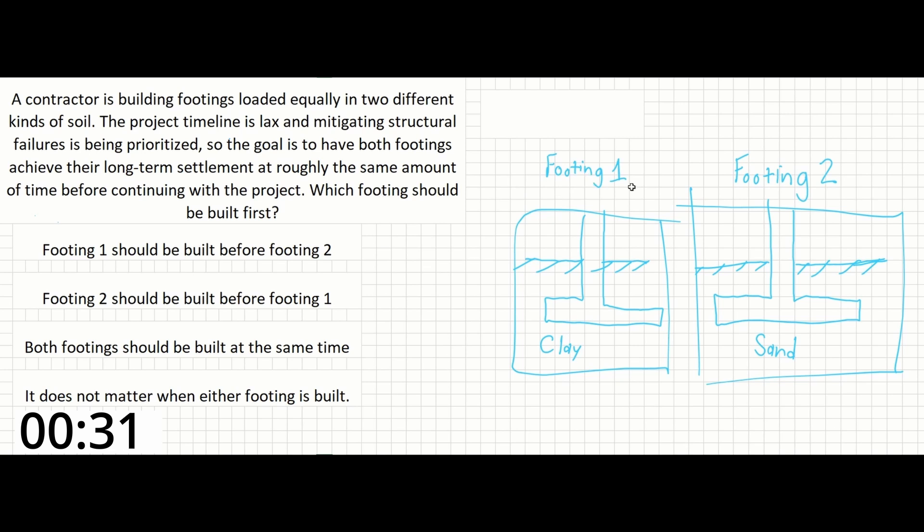So our options we can see over here for footing 1 and footing 2 are that footing 1 is built on clay, and footing 2 is built on sand. Footing 1 should be built before footing 2. Footing 2 should be built before footing 1. Both footings should be built at the same time, and it does not matter when either footing is built.